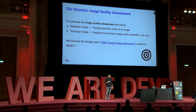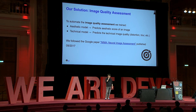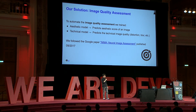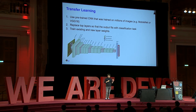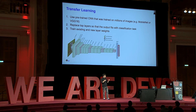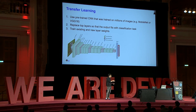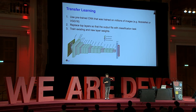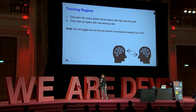Our solution is based on a Google paper called Neural Image Assessment (NIMA), itself building on work from two Harvard students proposing a specific loss function. This approach can solve both the aesthetic and technical quality models; today I'm focusing on aesthetics. During this project we also used transfer learning — a pre-trained convolutional network trained on ImageNet, which contains one million examples across 1,000 categories, trained to detect humans, cats, dogs, and so on.